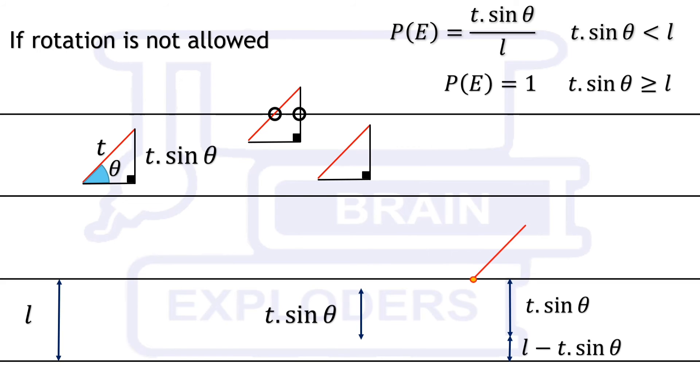Here also, if t sin theta is greater than l, then the probability is 1. Now, come to general problem as described in the starting of the video. We will solve one by one for two cases, t less than l and greater than l.